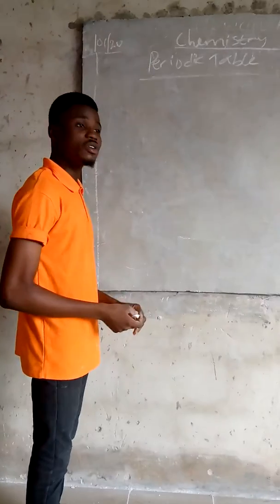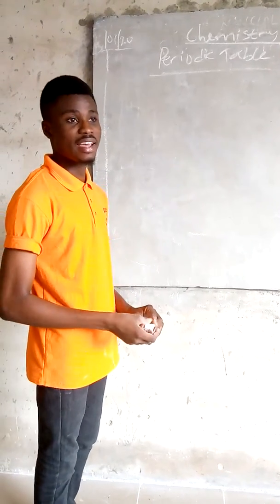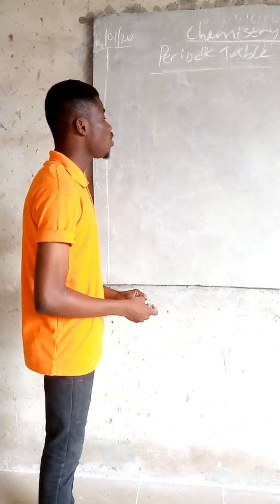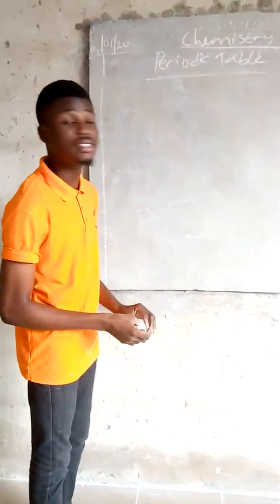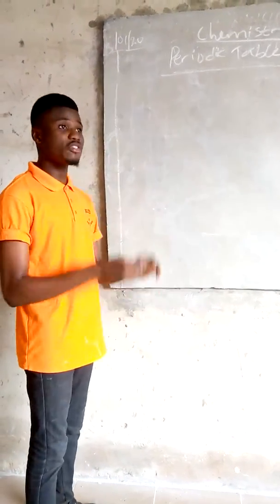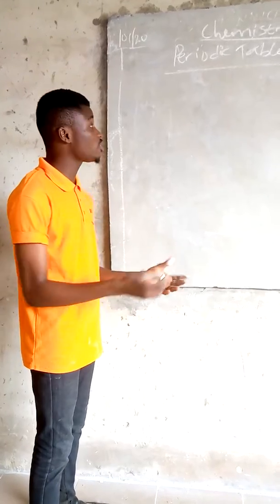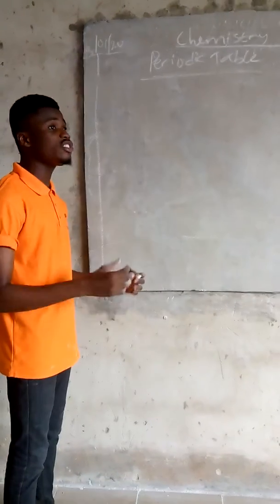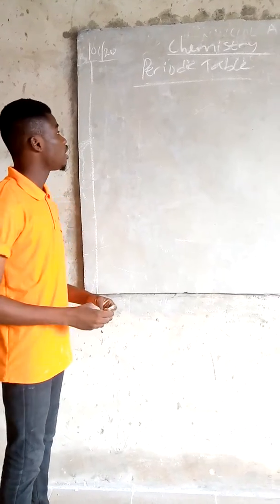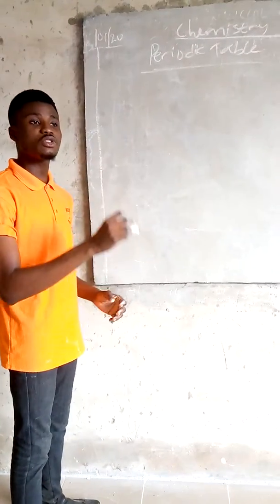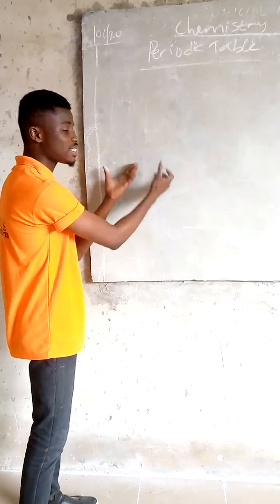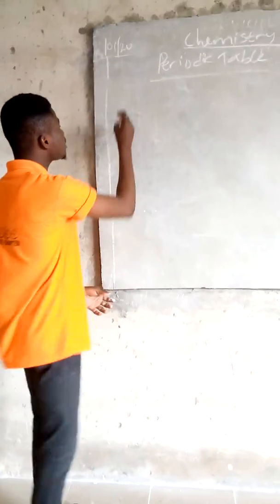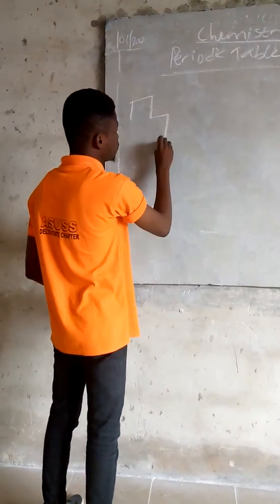The periodic table was introduced by a Russian scientist called Dmitry Mendeleev in the year 1869. He was the first to come up with the arrangement of the periodic table, and he arranged it according to the increasing atomic mass of all the elements. So all the elements you can ever think of are present in the periodic table, and this is the structure of the periodic table.